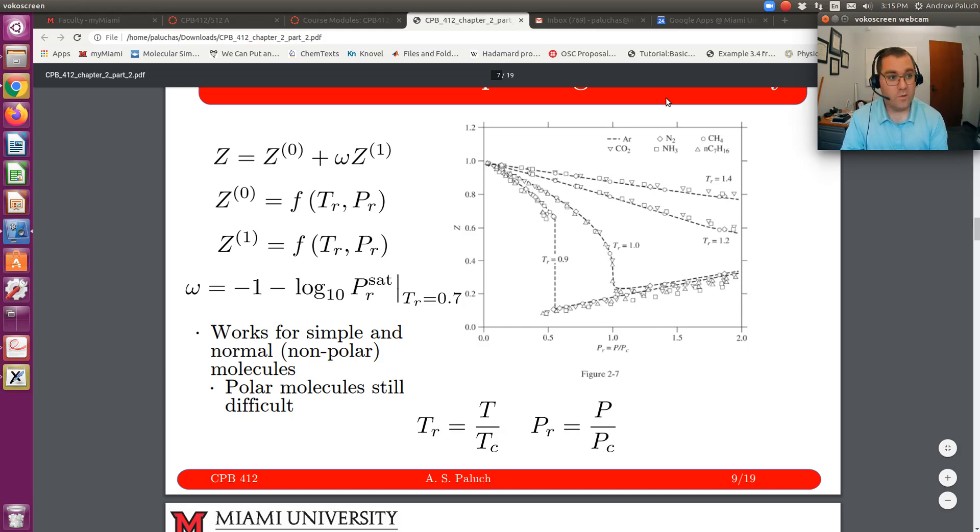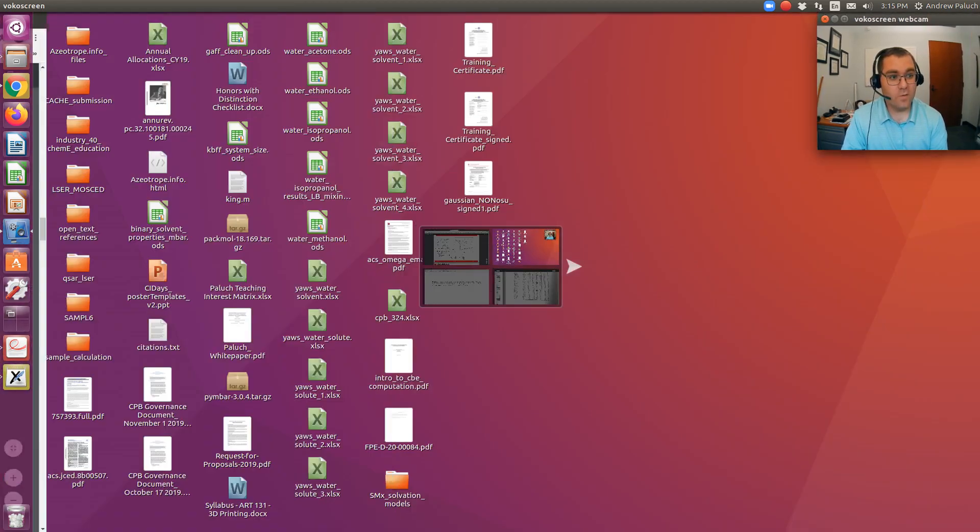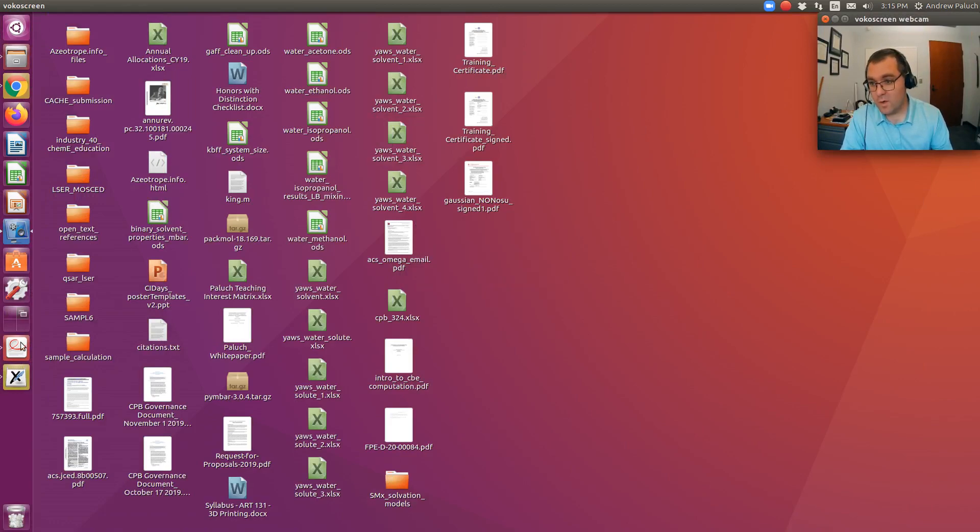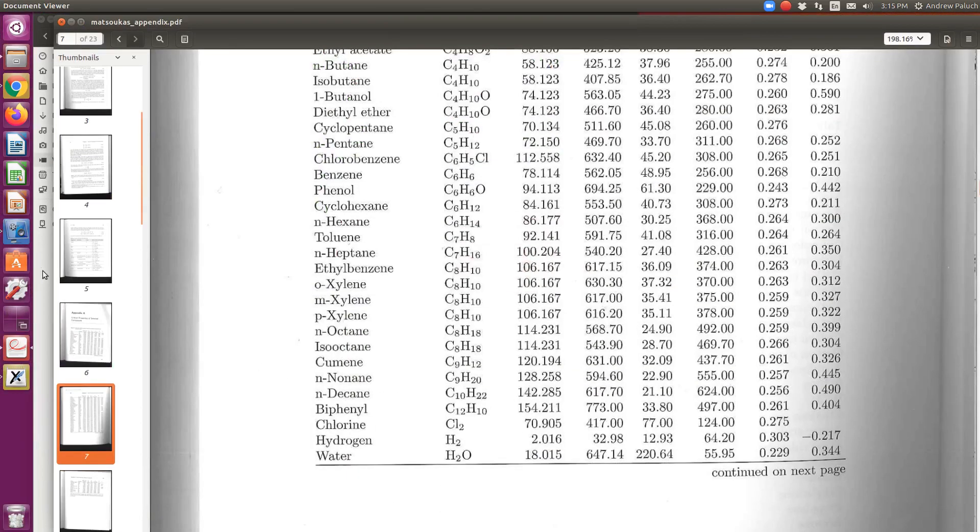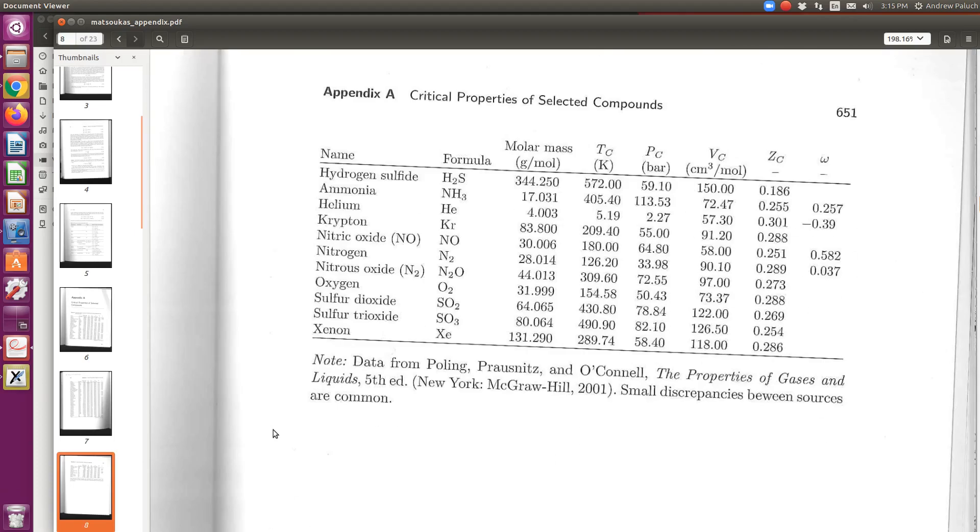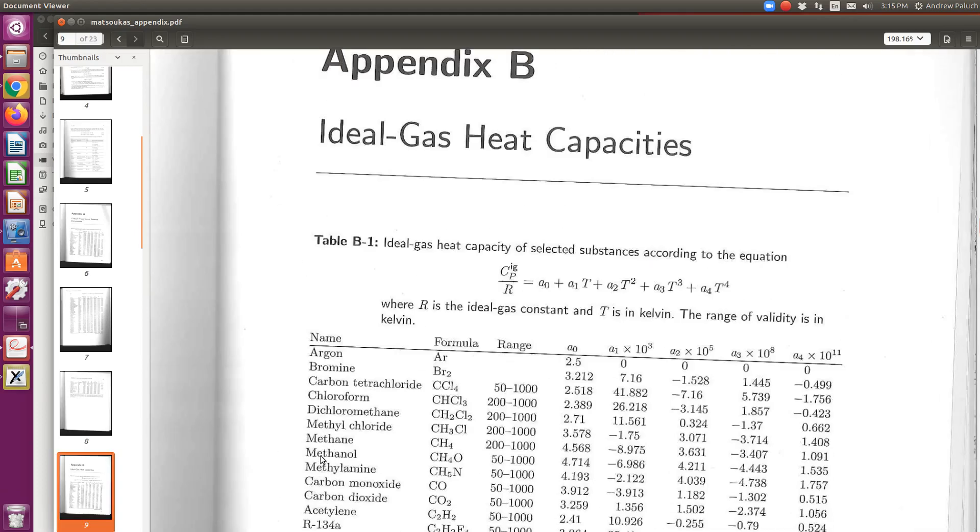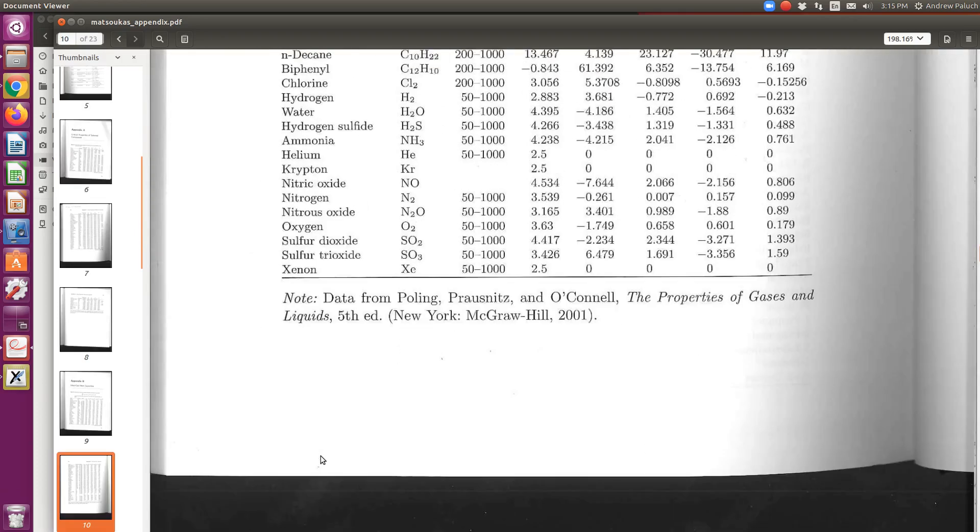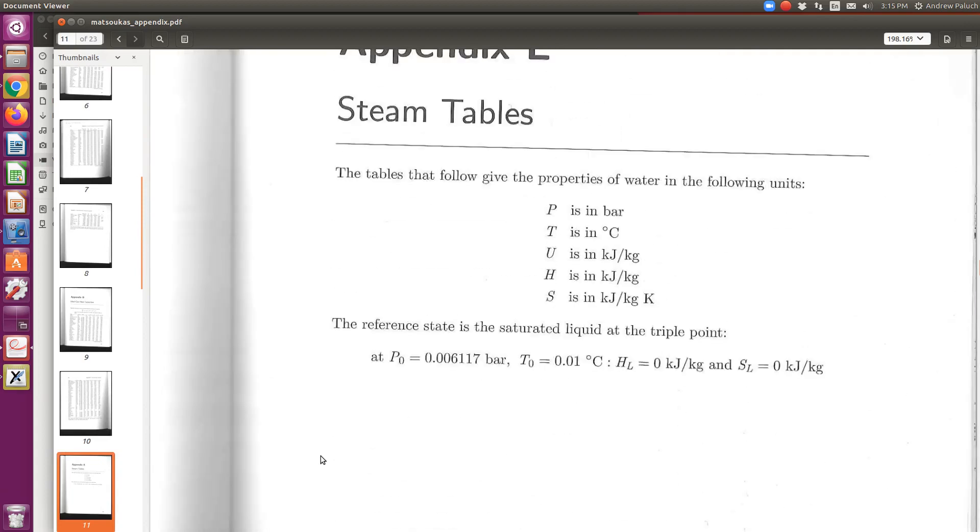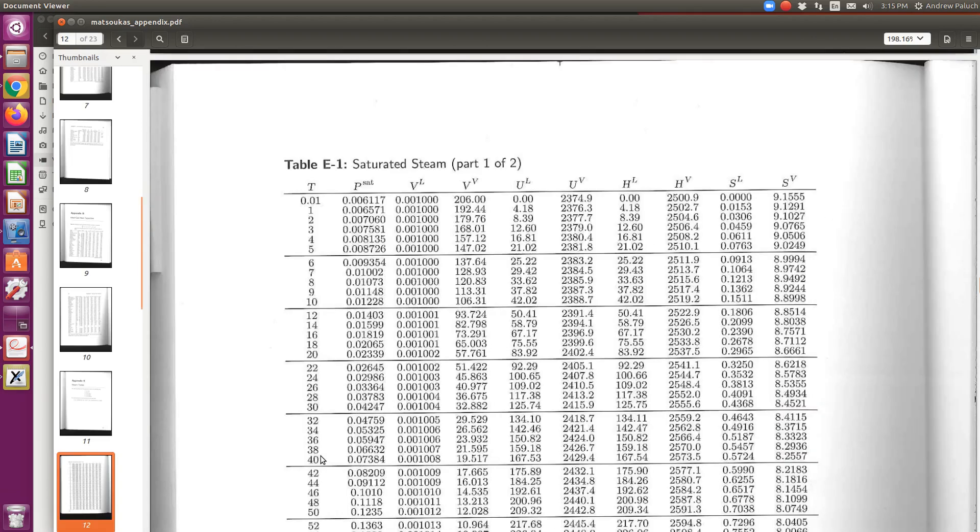And then I know to work with the steam tables, I'm going to have to convert that to degree C. Okay, so then what I'll do is, so I'm going to go now over to my steam tables, which I thought were open here. Yep, here they are. Okay, so that was Appendix A. Okay, now if I look at Appendix E, my steam tables, the first one's for saturated steam. Alright, so if I calculate my actual temperature of water at a reduced temperature of 0.7, and convert to degrees C,